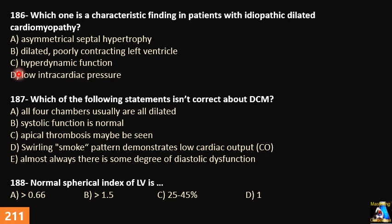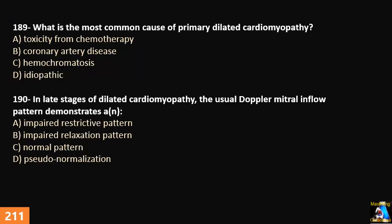Question 188: Normal spherical index of the left ventricle is: A) more than 0.66, B) more than 1.5, C) 25–45%, or D) 1. Question 189: What is the most common cause of primary dilated cardiomyopathy? A) toxicity from chemotherapy, B) coronary artery disease, C) hemochromatosis, or D) idiopathic. Question 190: In late-stage dilated cardiomyopathy, the usual Doppler mitral inflow pattern demonstrates: A) restrictive pattern, B) impaired relaxation pattern, C) normal pattern, or D) pseudonormalization.